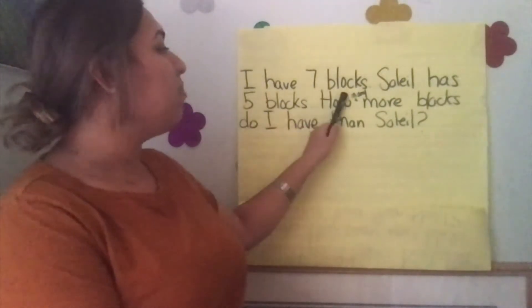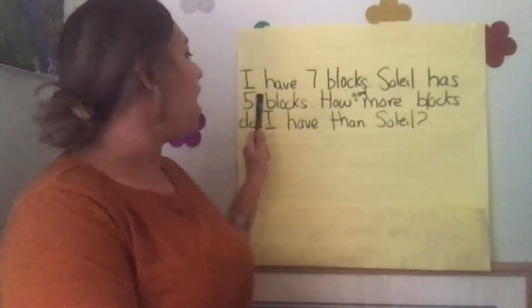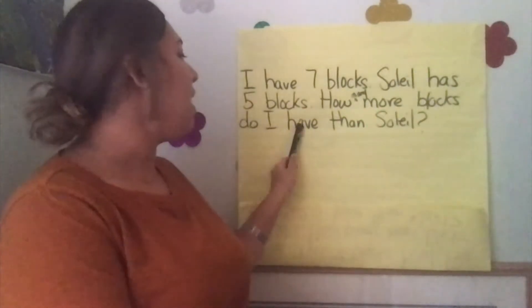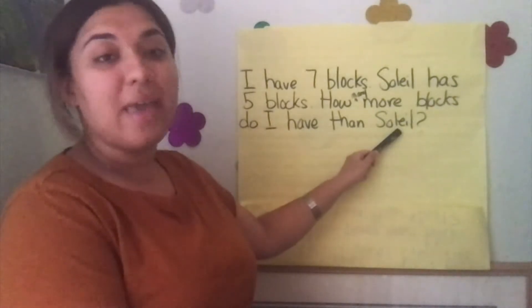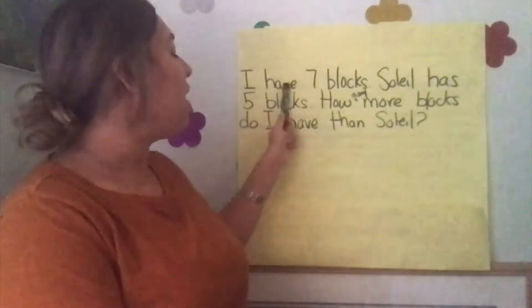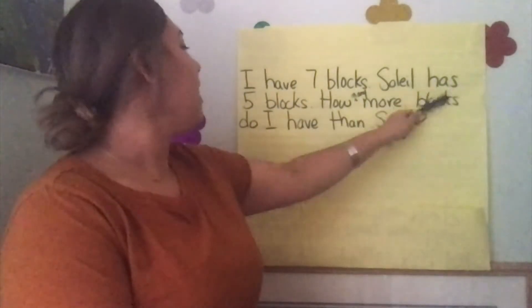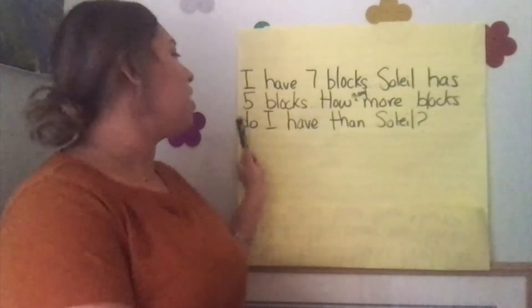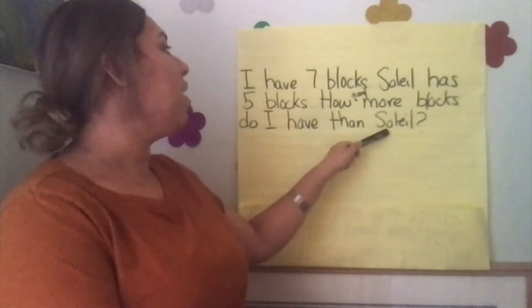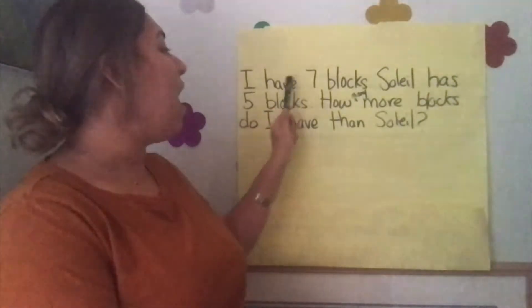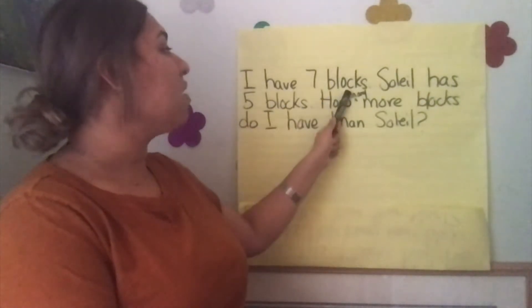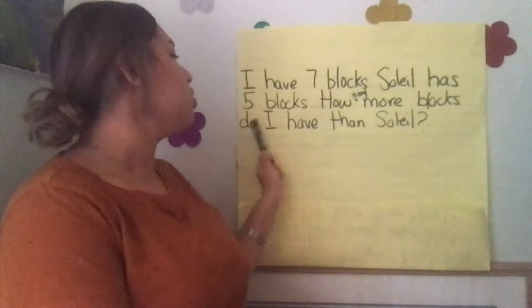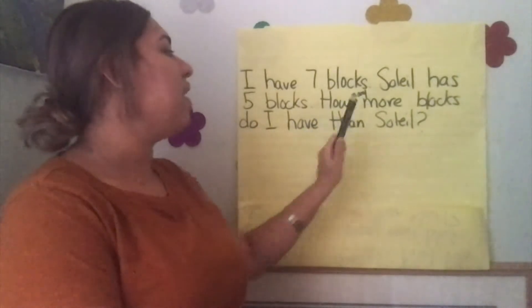I have seven blocks. Soleil has five blocks. How many more blocks do I have than Soleil? Let's read it again: I have seven blocks. Soleil has five blocks. How many more blocks do I have than Soleil?